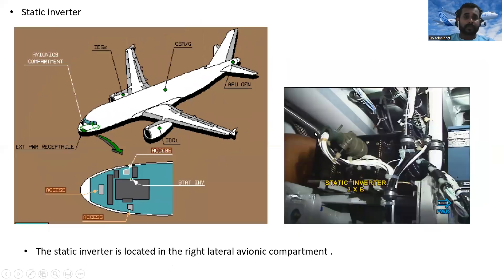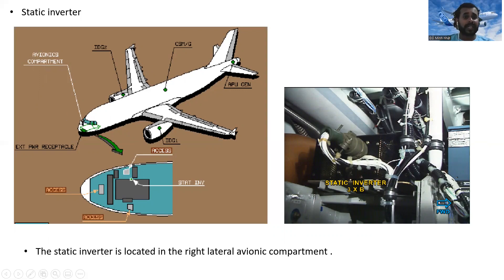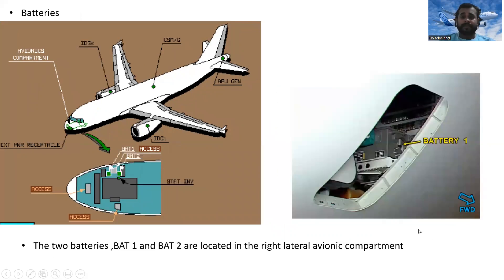The static inverter is located in the right lateral avionics compartment — you can see the static inverter unit here. The two batteries, BAT 1 and BAT 2, are also located in the right lateral avionics compartment.